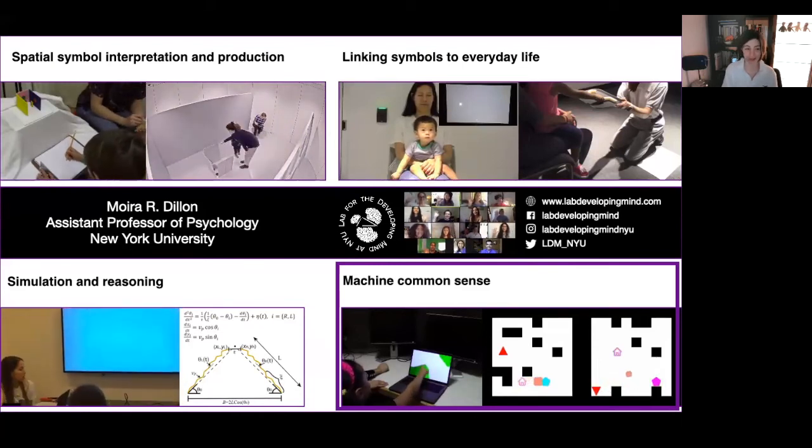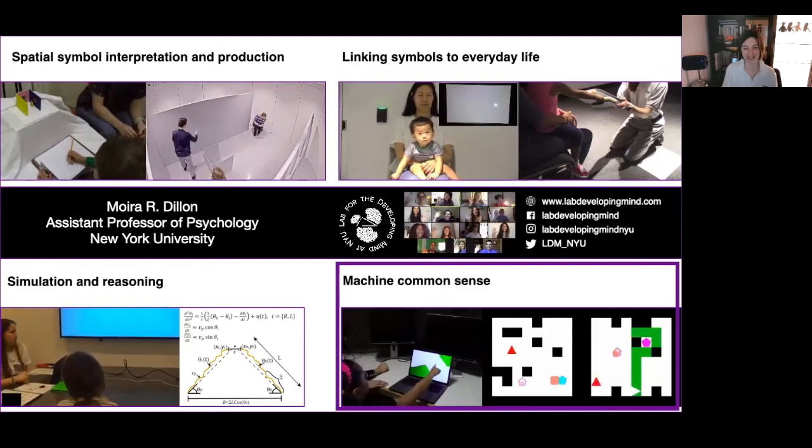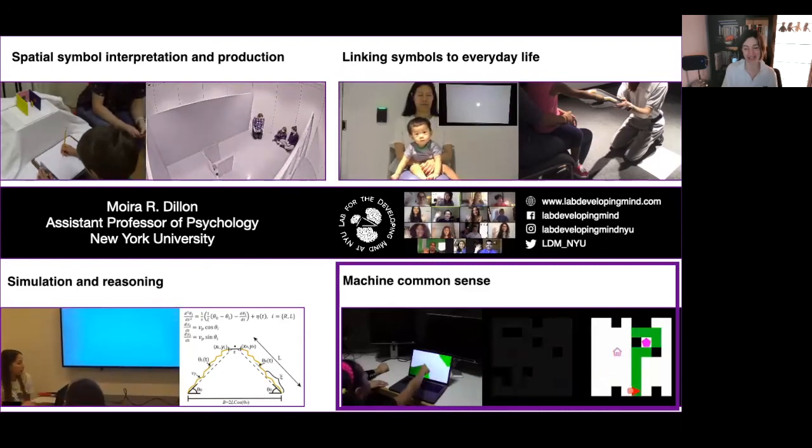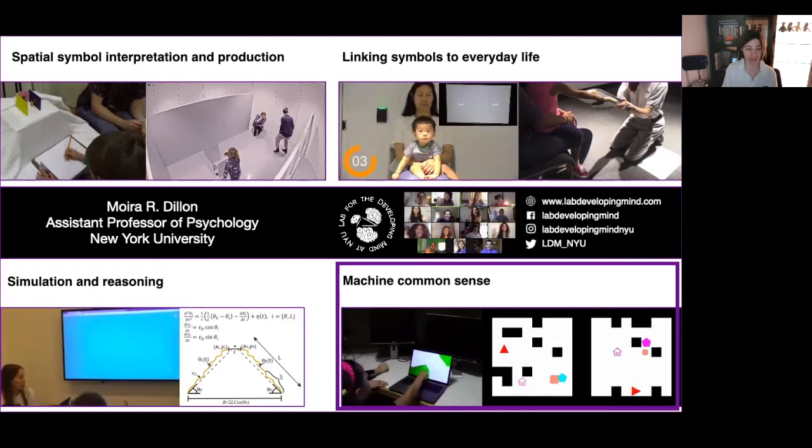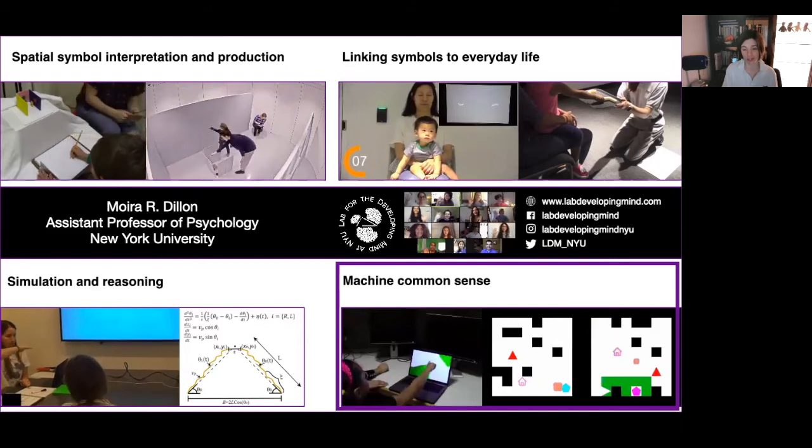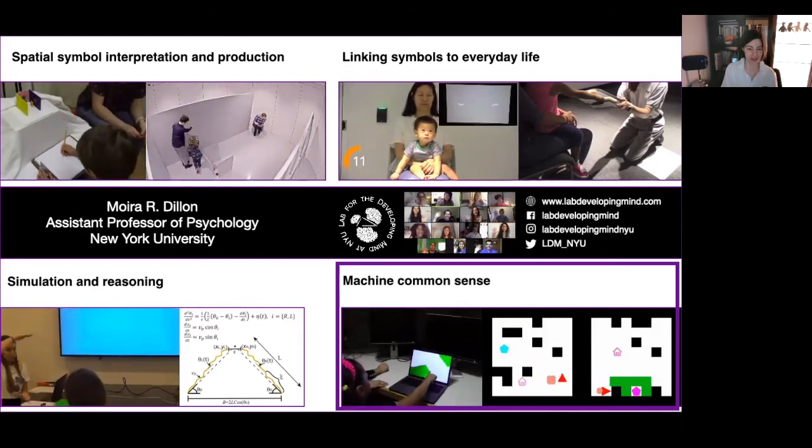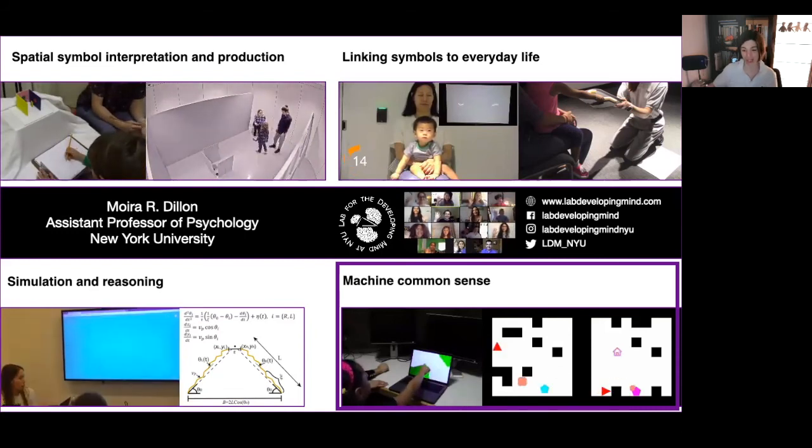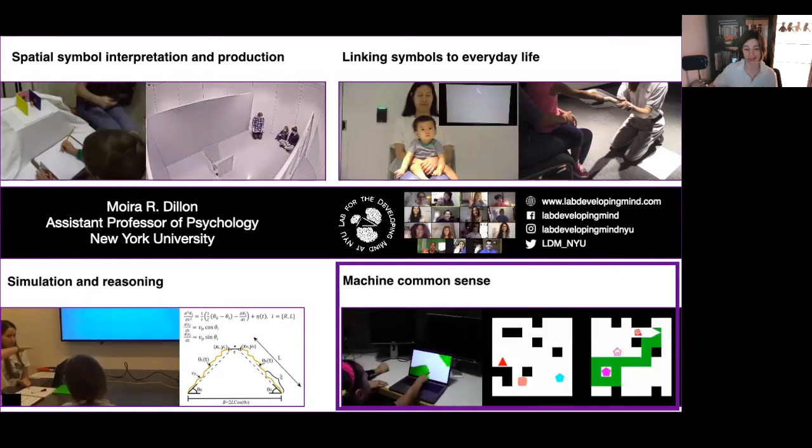Our first benchmark, the Baby Intuitions Benchmark, or BIB, tests the intuitive psychology of infants and AI to recognize that agents have preferences for particular goal objects, they act efficiently towards their goals, and they engage in complex series of instrumental actions to bring about their goals. Bridging the developmental and computational cognitive sciences will not only allow us to create AI that we can better understand, but also AI that can better understand us.